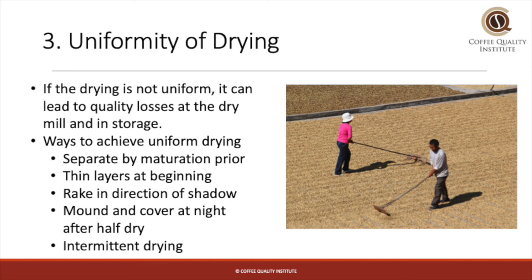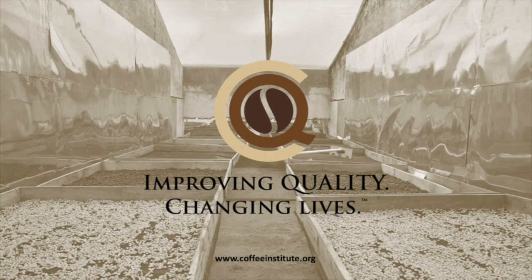Once the coffee has reached half dry, usually after several days, mound the coffee and cover it at night. If mechanically drying the coffee, use lower temperatures — less than 40 degrees Celsius coffee mass temperature — and even perform intermittent drying, applying heat for 12 hours and then letting the coffee rest for 12 hours. This is far from an exhaustive list, but hopefully it has provided some insight into how important uniformity is in the post-harvest.